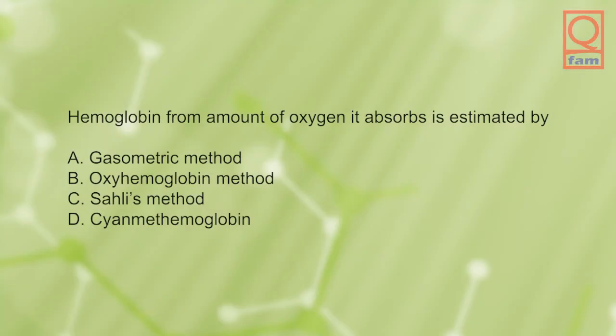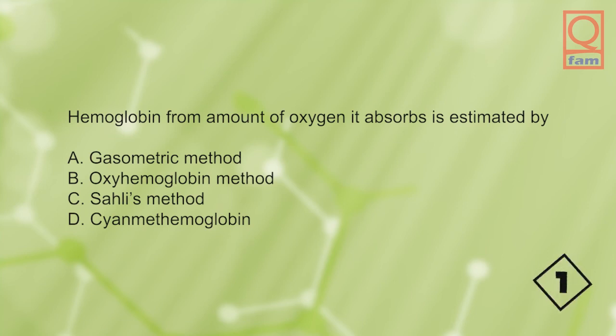Hemoglobin, from the amount of oxygen it absorbs, is estimated by: A) gasimetric method, B) oxyhemoglobin method, C) Sahli's method, D) cyan-methemoglobin. The answer is A, gasimetric method.